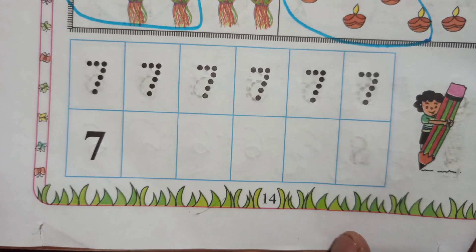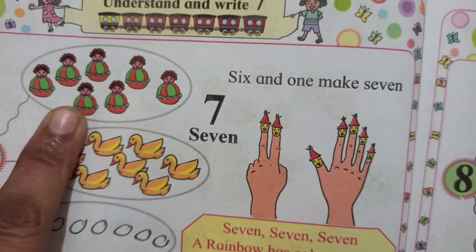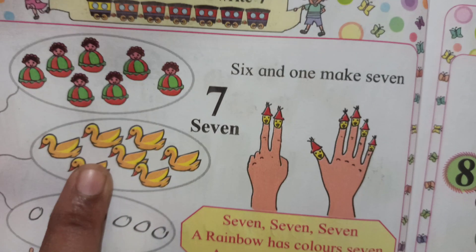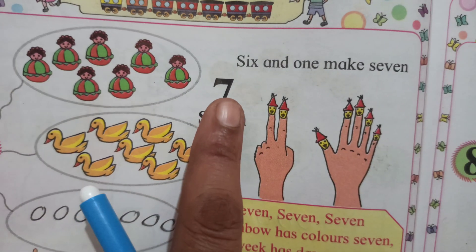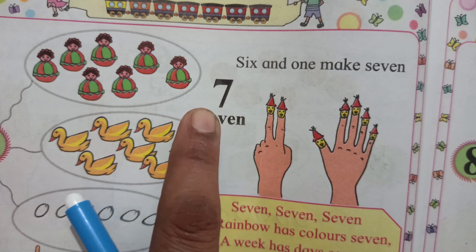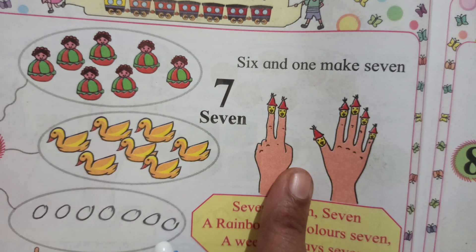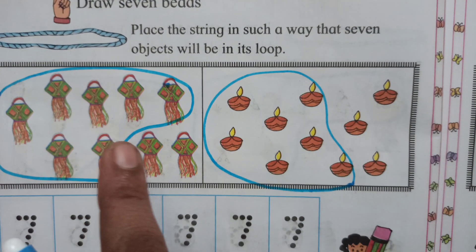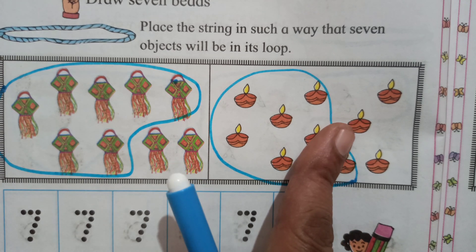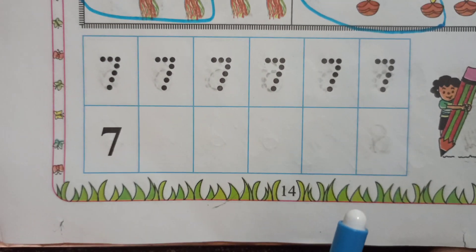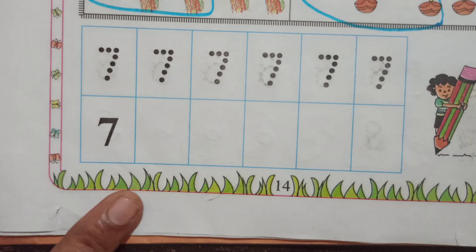Then next, our activity for writing. Above all these activities — the 7 ducklings, draw 7 beads, the 7 numbers, the spelling S-E-V-E-N, and showing 7 fingers — all these activities are to help us understand 7. We better understand number 7. And the last activity: the textbook gives us only a writing practice for number 7. Write number 7 neat and clean.